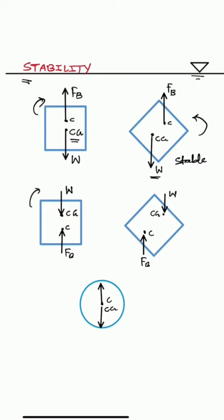In the second case, if we give displacement to this body, then these two forces are forming a couple which is an overturning couple and that makes this case an unstable equilibrium.